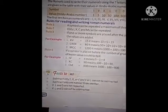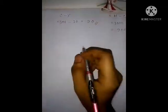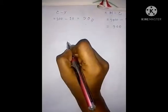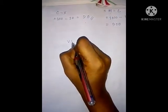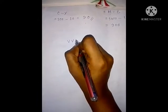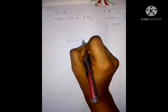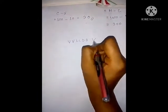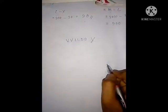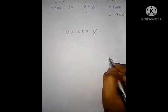We cannot write VV, LL, or DD — these symbols cannot be written this way.